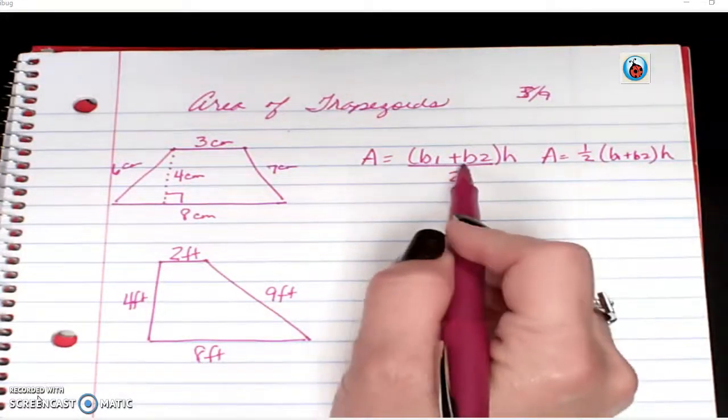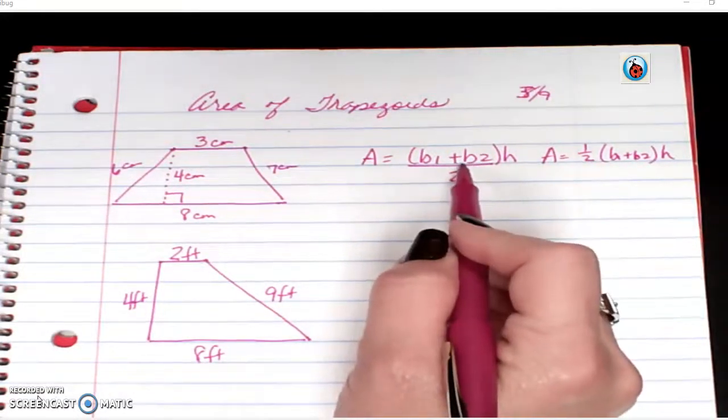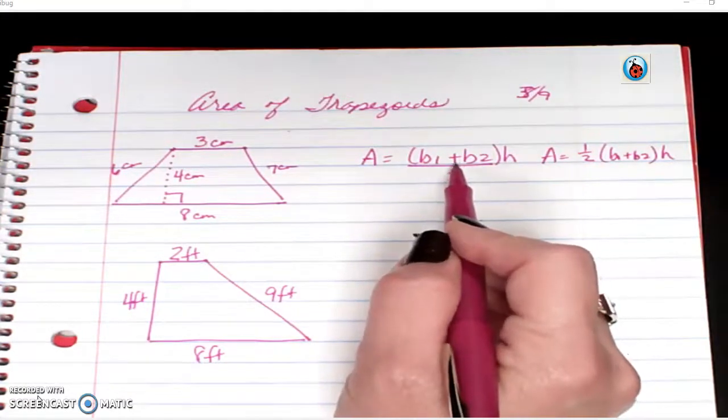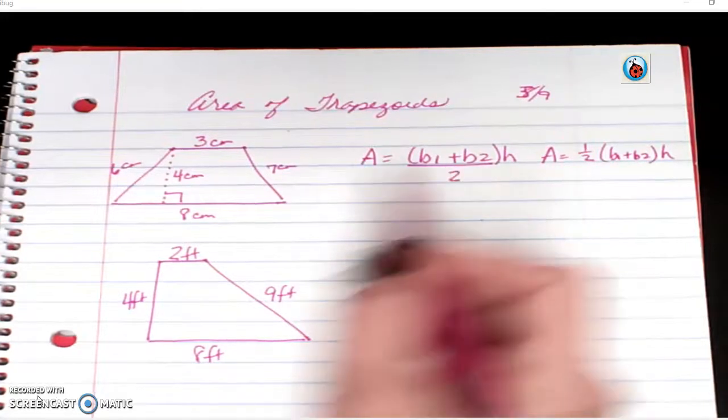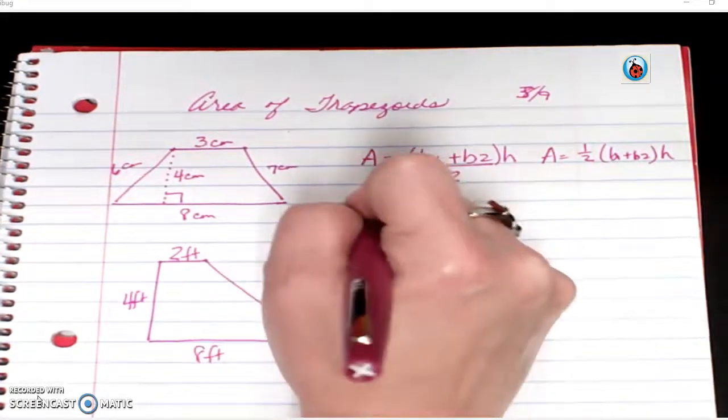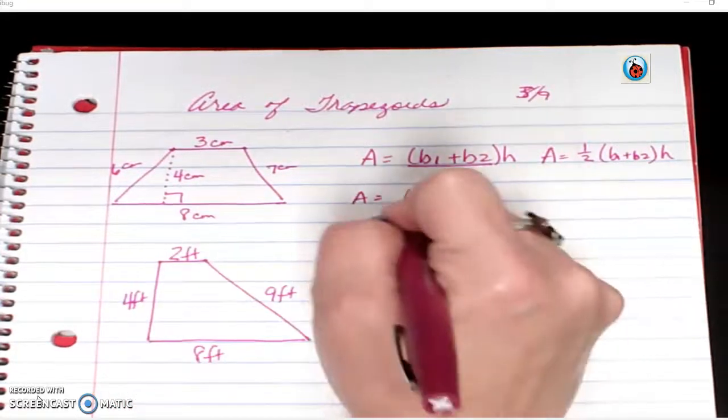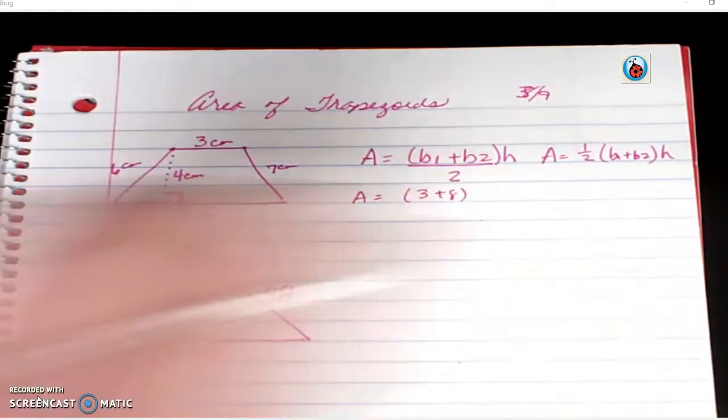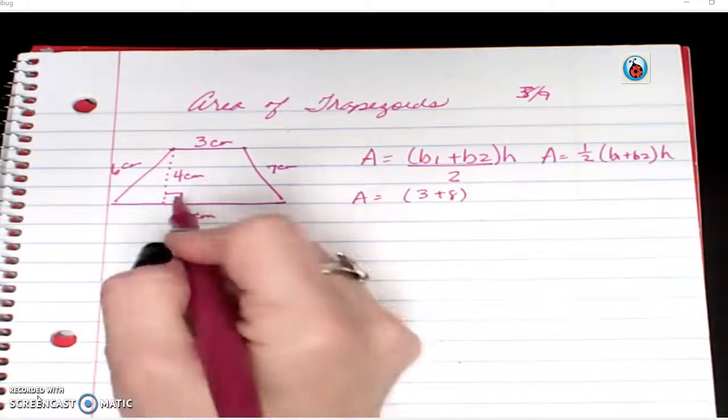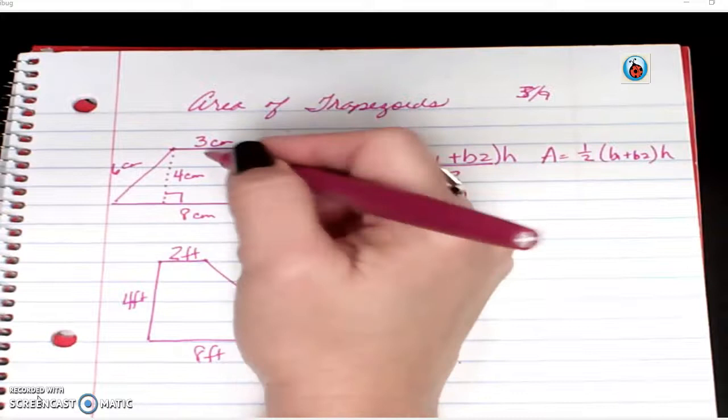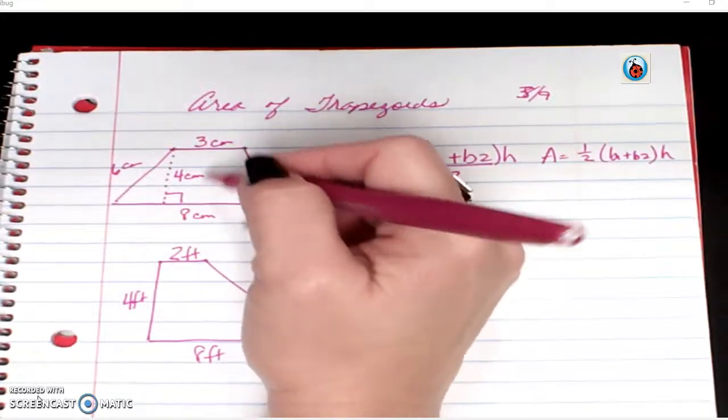So your two bases, if you think about just a base being on bottom, it doesn't make sense. But the definition of these bases are the parallel sides. So in this case, base 1 is going to be the 3 or the 8, it does not matter which one. The height always goes straight up and down. The height also always tells you the distance between the two bases.